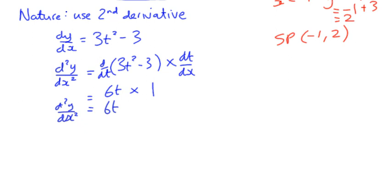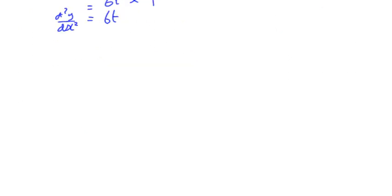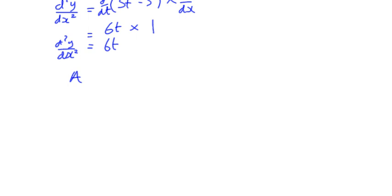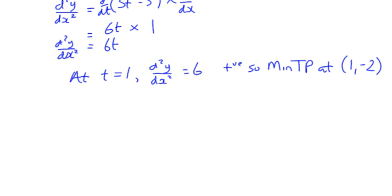What does that mean? It means that we can work out our nature. At our first stationary point when t is 1, the second derivative is just 6 lots of that, which is 6. That's positive. So we've got a minimum turning point at the point (1, -2).